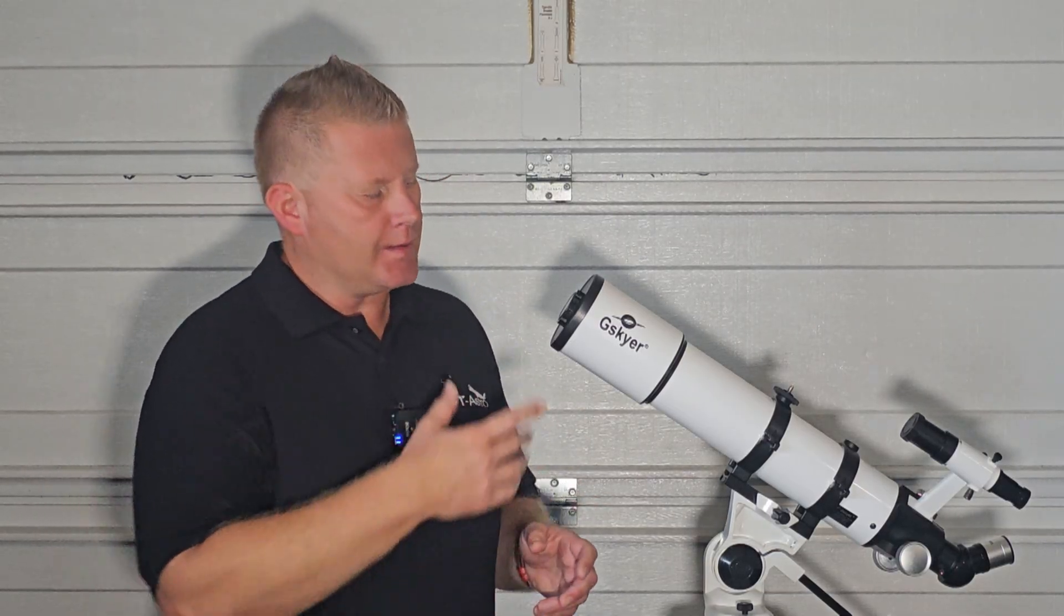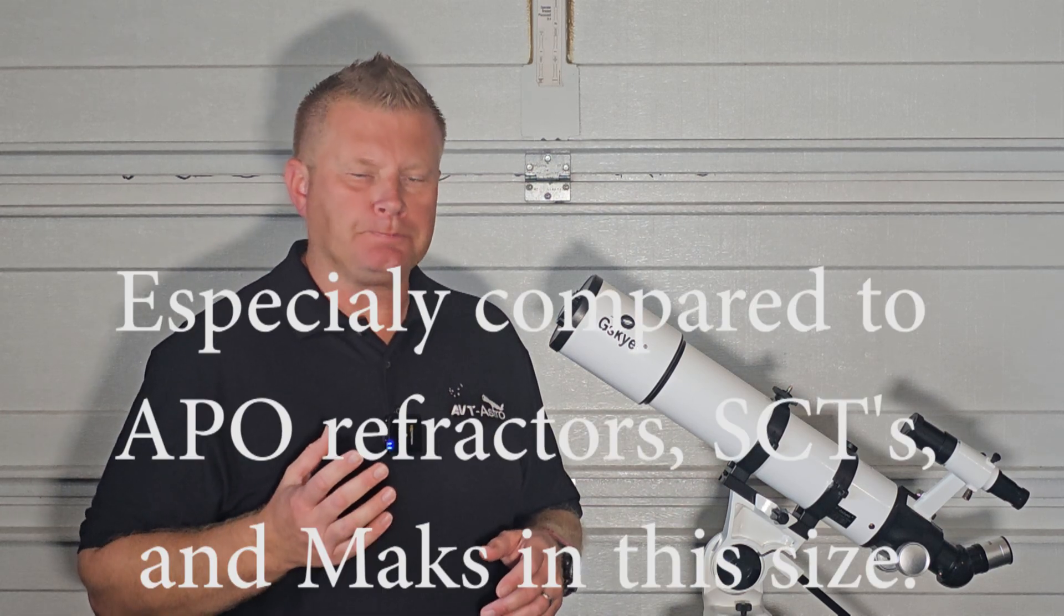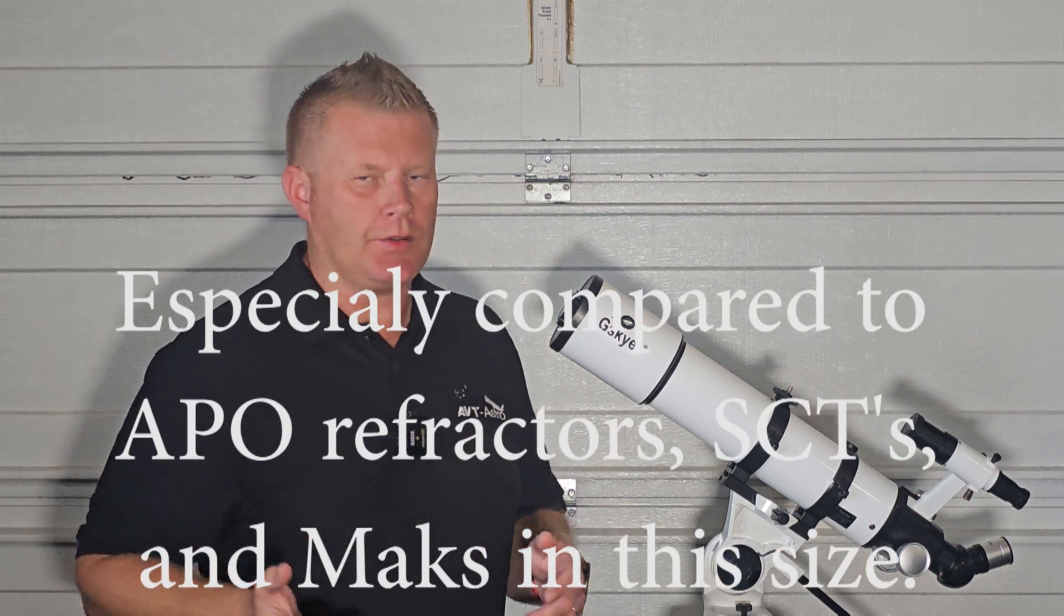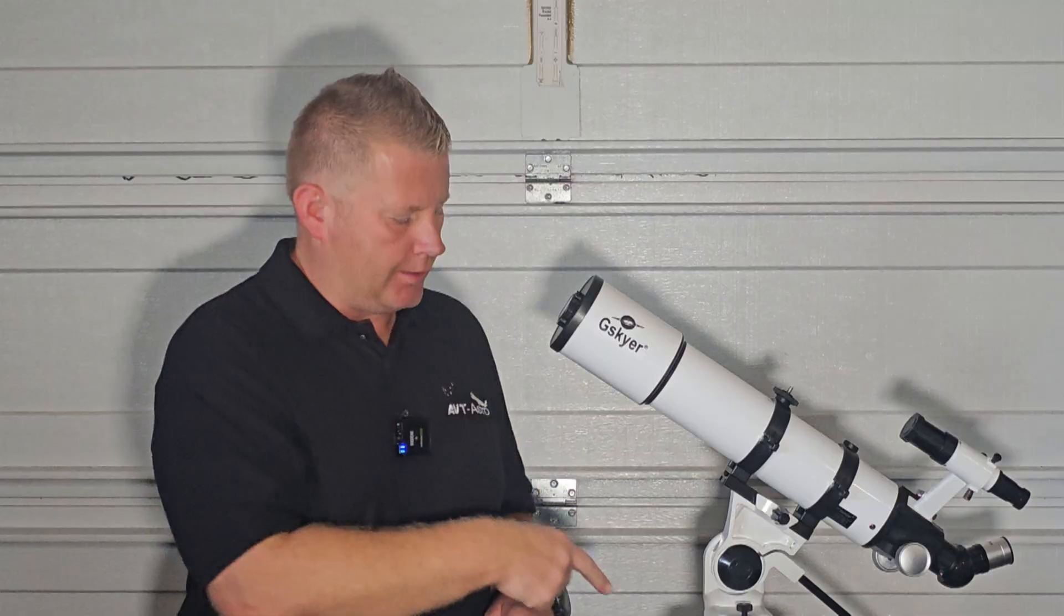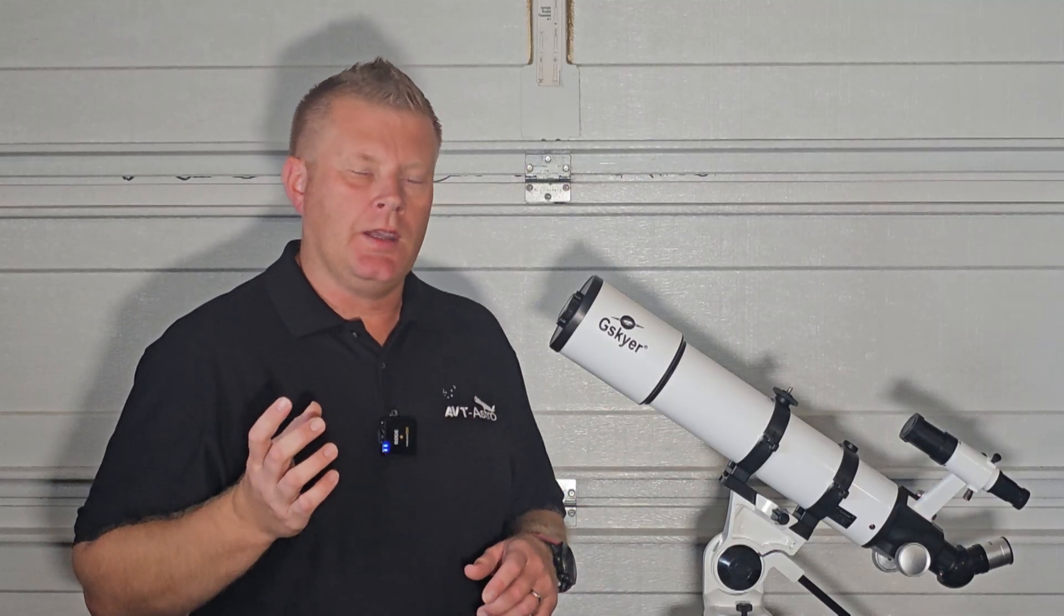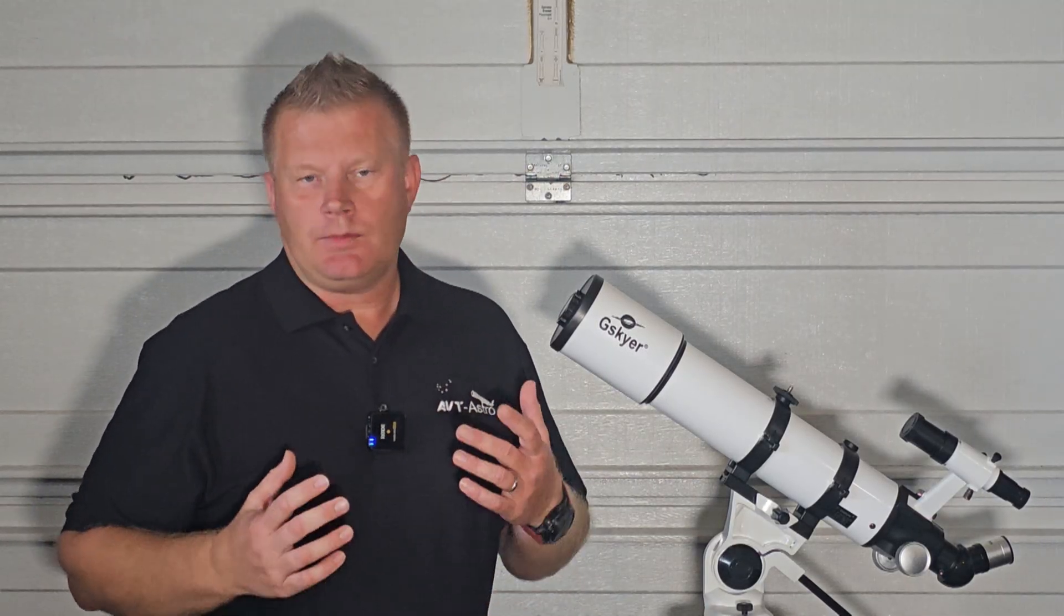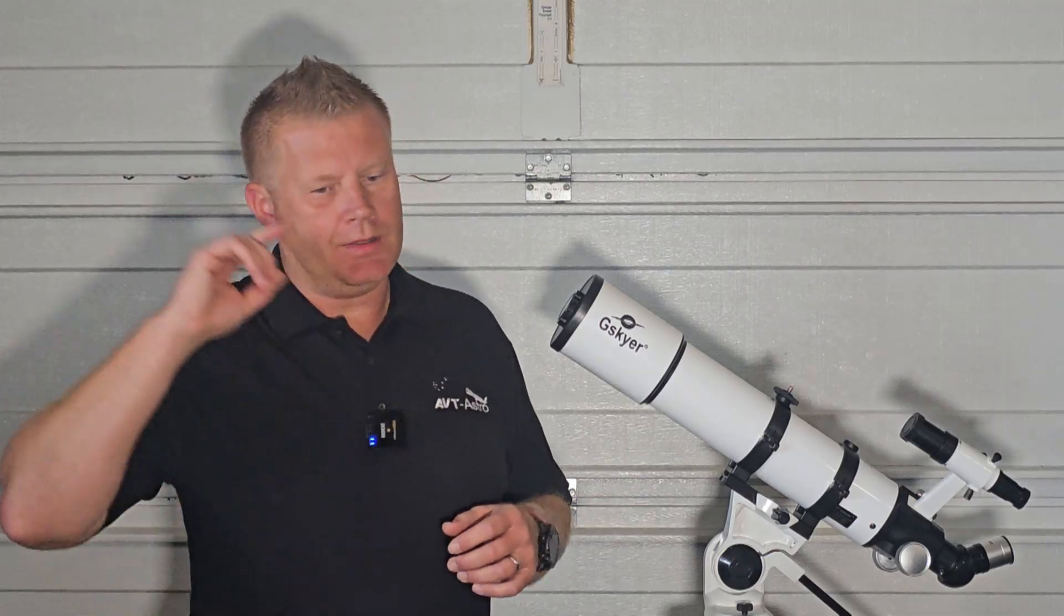Looking at the planets, this is kind of like one thing that this is going to be not as strong of a performer at. Just due to the nature of it just being an achromatic telescope, kind of smaller aperture. You will still be able to see like the bands of Jupiter on it with the five millimeter eyepiece that it comes with. Saturn, guys, it's going to be a treat. Anytime you look at Saturn, especially for your first time through a telescope and you see the rings around it, I could guarantee your socks are going to be blown off and that will be a treat.